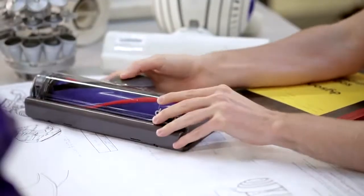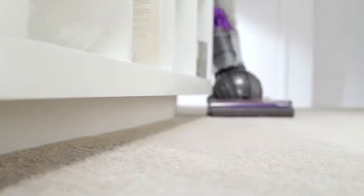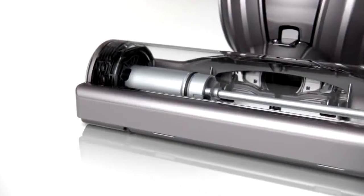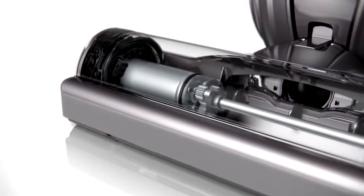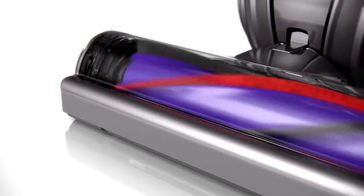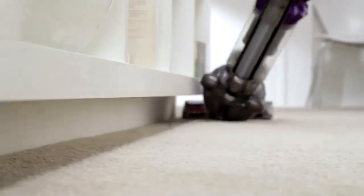The key aim on this cleaner head was to keep it low profile and maintain high maneuverability. What we've done in order to achieve this is we've put the motor within the brush bar itself. It allows us to keep the profile of the head low but also allows us to push the cleaner head back up against the ball for better maneuverability.